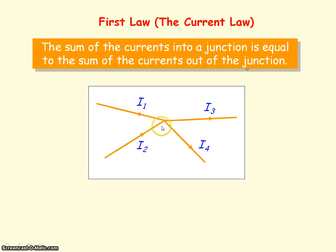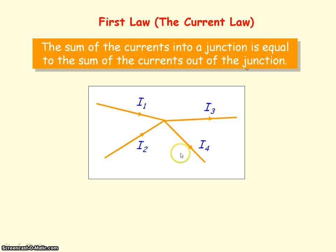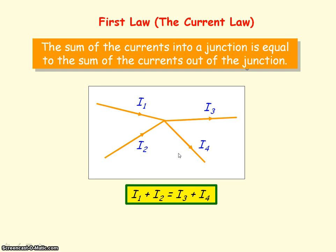So if we consider this junction here, the currents entering the junction are I1 and I2, and the currents leaving the junction are I3 and I4. So according to Kirchhoff's first law, we'd say I1 plus I2 will equal I3 plus I4.